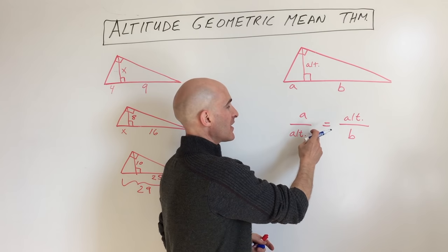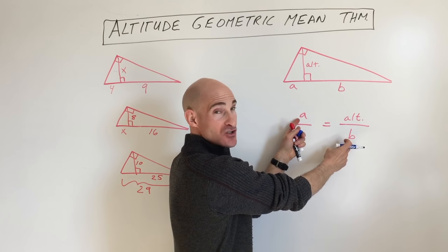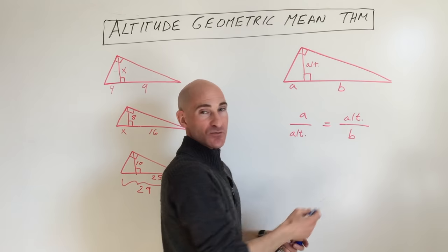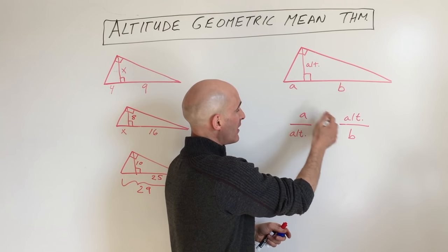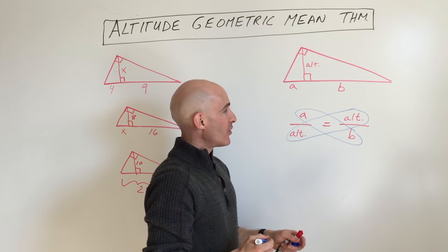The geometric mean are these two values, and the extremes are these two values. There's something called the means-extremes property, which you probably know as cross multiplication, where this product equals this product.